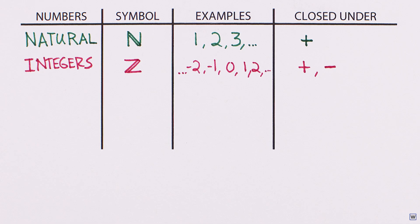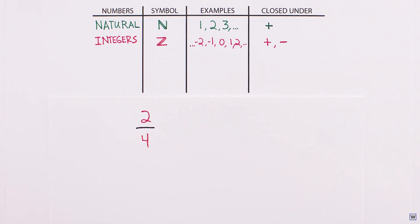As we include more algebraic operations, we must continue to expand our number system. Division requires us to expand our number system to include fractions, also known as rational numbers. Rational comes from the word ratio. Rational numbers are numbers that can be expressed as the ratio of two integers.